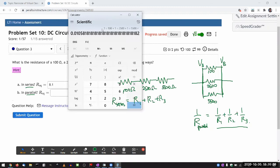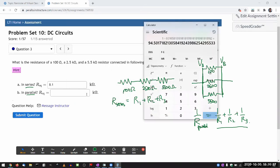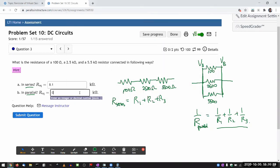Okay, so that's the one over R parallel. So I need to take that, store it to memory, and take the reciprocal of that, recall from memory, to get the value. So I get 94.5 ohm. So in terms of kilo ohms, it's 0.0945.